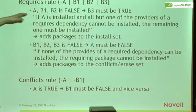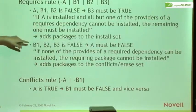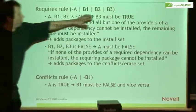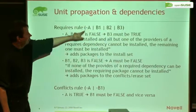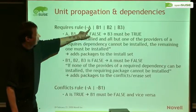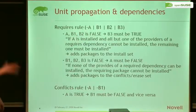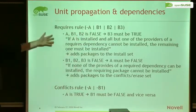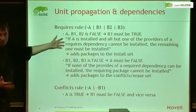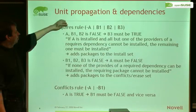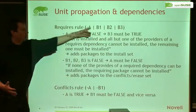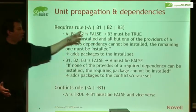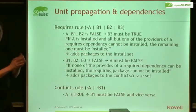Let me show what unit propagation means in terms of RPM dependencies. For a requires rule, say it's unit — all must be true except one. If B3 is the one not yet assigned, and all others are false — A is true, B1 is false, B2 is false — then B3 must be true. In plain language: if A is installed and B1 and B2 can't be installed, then I must install B3. So if a package is installed and all alternatives are reduced to one installable, I must take that alternative. This is how every other solver also works — it takes dependencies and if only one package is left, it installs it.